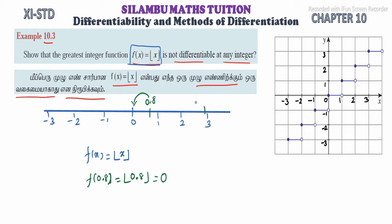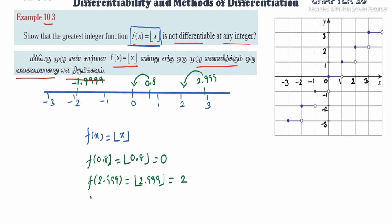If we apply a value like 2.999, then f(2.999) equals the greatest integer function of 2.999, and the outcome is 2 — the greatest integer to the left side. Similarly, for minus 1.9999, f(minus 1.9999) gives the greatest integer to the left side, which is minus 2. So that is the outcome.